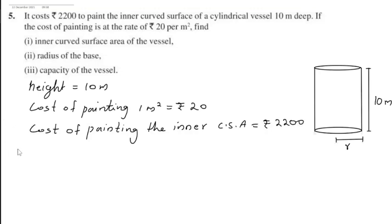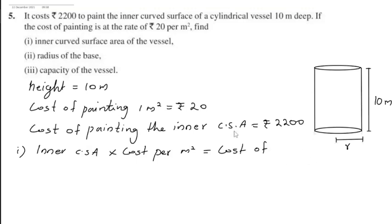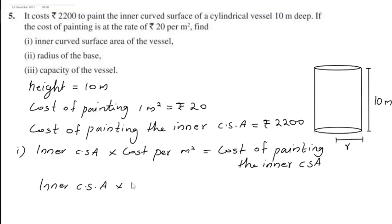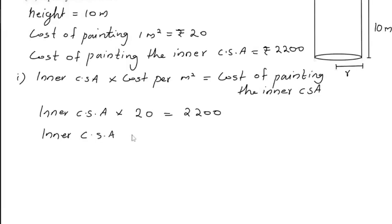We have to find the inner curved surface area of the vessel. We know that inner curved surface area multiplied by cost per meter square gives the cost of painting the inner CSA. By substituting values, inner CSA multiplied by Rs 20 equals Rs 2200. So inner CSA is 2200 divided by 20, which gives 110 meters square.